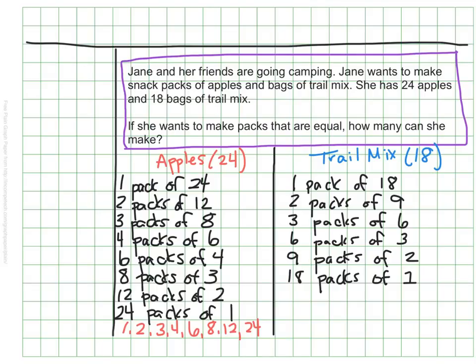How'd you do? I came up with six different options. One pack of 18, two packs, each with nine mini bags of trail mix, three packs of six, six packs of three, nine packs of two, or she could split all the trail mix up and make 18 different snack bags, each with one small bag of trail mix.